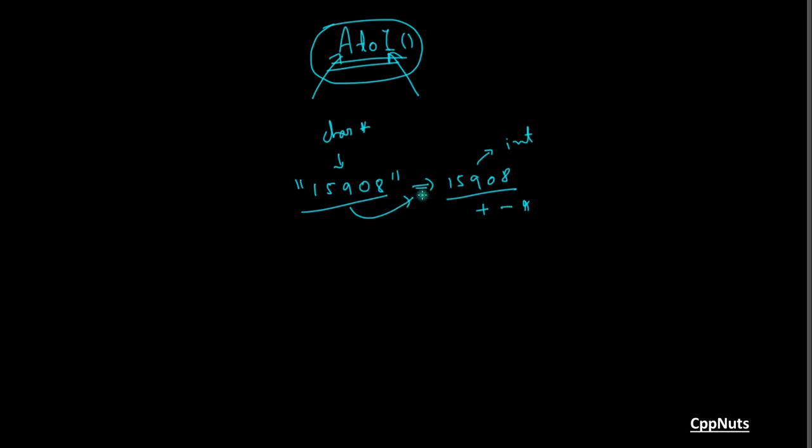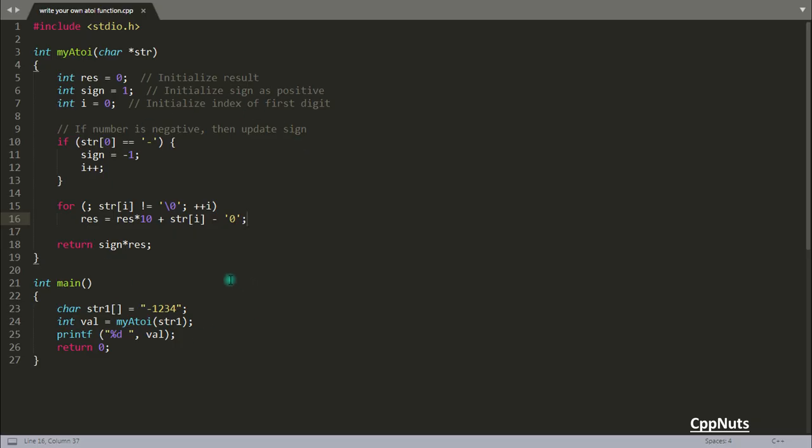This is your code. As you can see, we have this particular string. I forgot to mention that the string could be negative also. So this is minus 1234, and this is a character array we will pass to my atoi function.